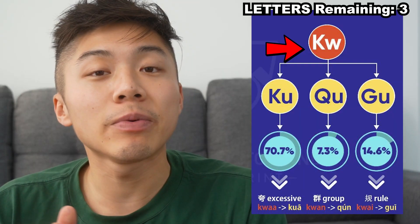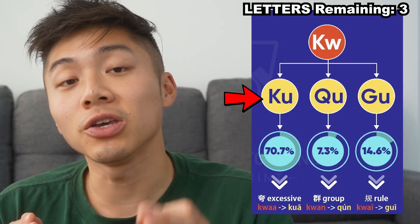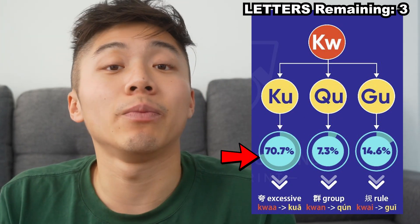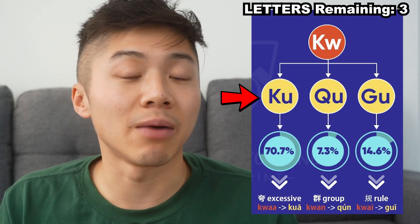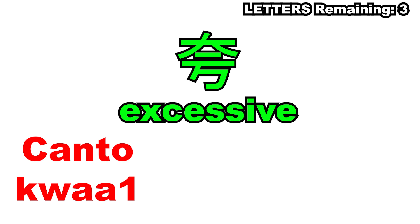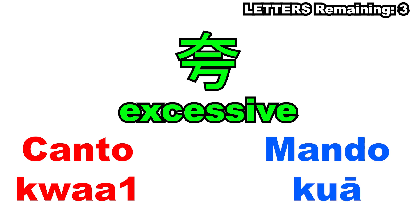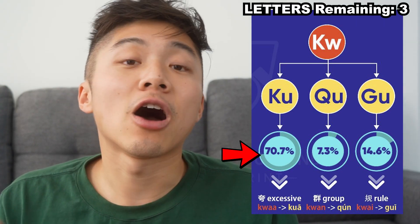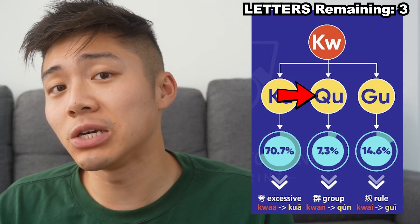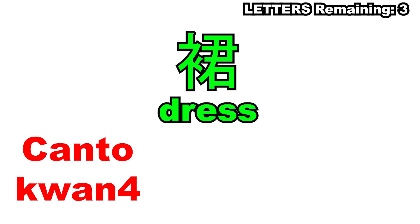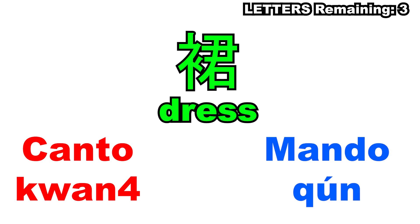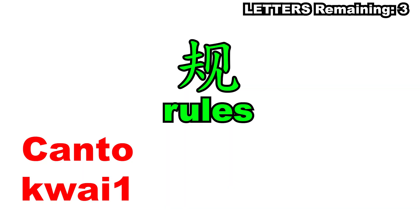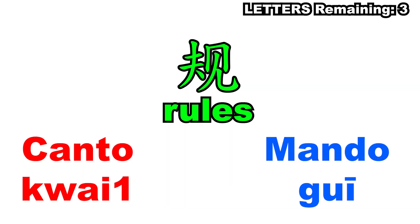Only three left to go. KW in Cantonese most commonly becomes KU, QU, or GU in Mandarin. Most of the time — about 70% — KW will become KU, so 'kwaa jang' for excessive becomes 'kuajang'. About 7% of the time it will become QU — so 'kwan' for dress becomes 'qun' in Mandarin. And about 50% of the time it will become GU — so 'kwaa ding' becomes 'guading'.